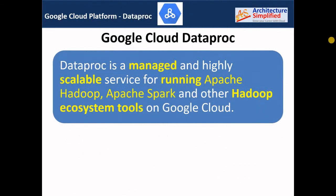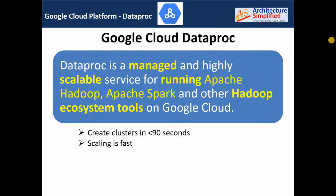The next point about Dataproc is that it is highly scalable. To understand why, let's understand how clusters are created in Dataproc. You simply create clusters by specifying what computing options you want to spin up — for example, Compute Engine — and specify the machine type depending on your workload. You can create a cluster in Dataproc in less than 90 seconds, which is awesome. In contrast, creating clusters in Hadoop used to take hours or sometimes days. Because creating a cluster is so quick and easy in Google Cloud, Dataproc is highly scalable, and you can have Compute Engine instances as part of your managed instance group in your cluster.